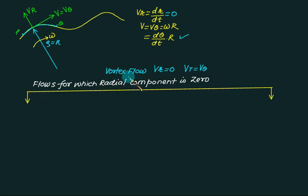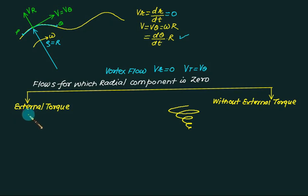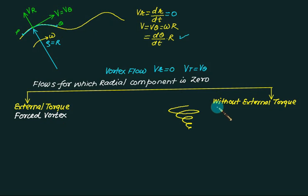Vortex flow is classified into two basic categories. One is due to external torque — if you apply external torque, the flow is rotational. Without external torque, the flow occurs naturally, like in a kitchen sink. The flow with external torque is called forced vortex, with examples being a mixer or washing machine. The flow without external torque is called free vortex, similar to how free convection occurs without an external agency.